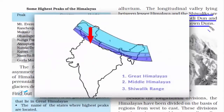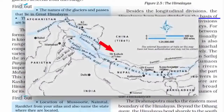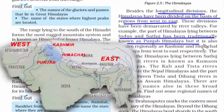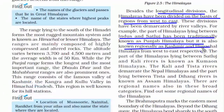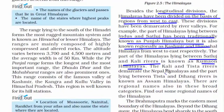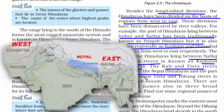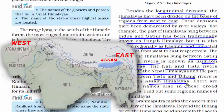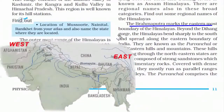Now understanding the Himalayas from west to east — the longitudinal divisions. The extreme northwest, lying between the Indus and Sutlej rivers, is called the Punjab Himalaya, also regionally known as the Kashmir and Himachal Himalaya. Between the Sutlej and Kali rivers is the Kumaon Himalayas. Between the Kali and Tista rivers lies the Nepal Himalayas. The part between the Tista and Dihang rivers is known as the Assam Himalayas. The Brahmaputra river comes from the easternmost boundary of the Himalayas.